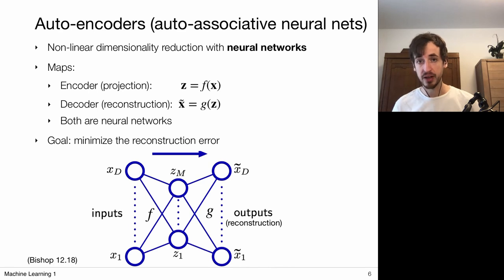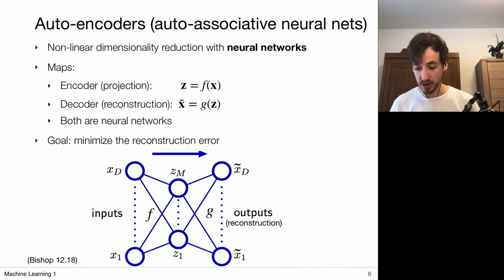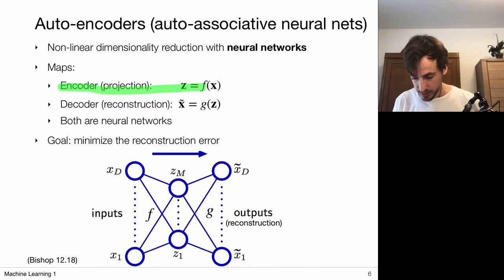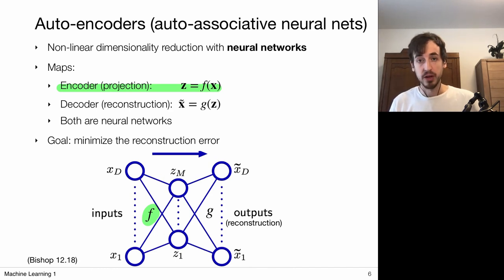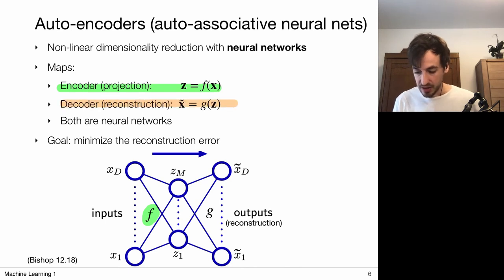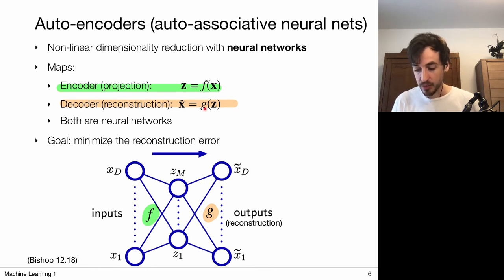Now let's move on to a different way for dimensionality reduction: we can also do this via neural networks. These types of neural networks are typically called autoencoders or auto-associative neural networks. The idea is similar to before — we have our input X and we want to map it to some latent variable, a lower dimensional representation. The neural network that does this is called the encoder: it takes an input and maps it to a latent variable. We can make this part very deep, resulting in a very complicated mapping of X to the latent variable.